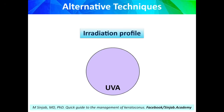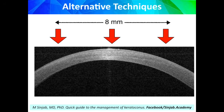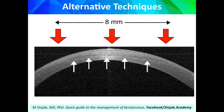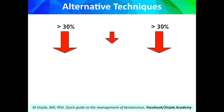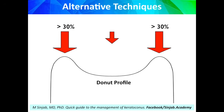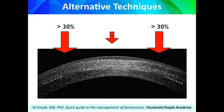Regarding the irradiation profile: in the traditional technique, the same amount of power is used over the entire irradiated area. As we see here, the demarcation line is not homogeneous — it is deep in the center and superficial at the periphery. This is called the top hat profile. But if we increase the intensity of UV light by about 30% at the periphery, we get what is called the donut profile, which produces a more homogeneous demarcation line of the same depth all over the irradiated area.